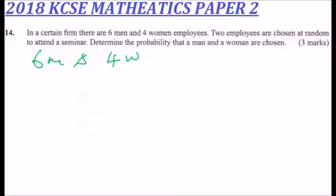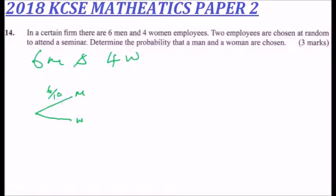We can use a tree diagram. The probability that a man is chosen first is six out of ten members, and the probability that a woman is chosen first is four out of ten members.